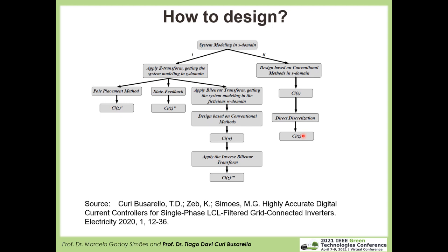Which path should we use? Again, it depends on the controller and application, but a good candidate is to design an analog controller first and then discretize it. This may be the first option — if the behavior is as expected, the controller is properly designed. Otherwise, a more specific methodology is needed: apply the Z-transform, get the model in the Z domain, and design the controller in a fully digital environment.